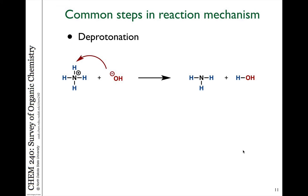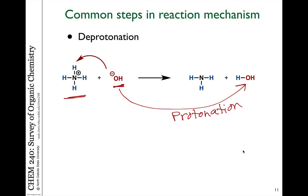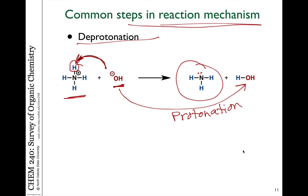The opposite of protonation is deprotonation — it's a proton transfer. In this case, OH minus takes the proton from ammonium and becomes protonated. If we focus on what the proton came off of, we refer to this as a deprotonation. The proton on ammonium is being deprotonated by OH minus to form the deprotonated ammonia species. There are many examples of deprotonations — from heteroatoms such as nitrogen or oxygen, or taking protons off of carbons. This occurs as a common step in reaction mechanisms.